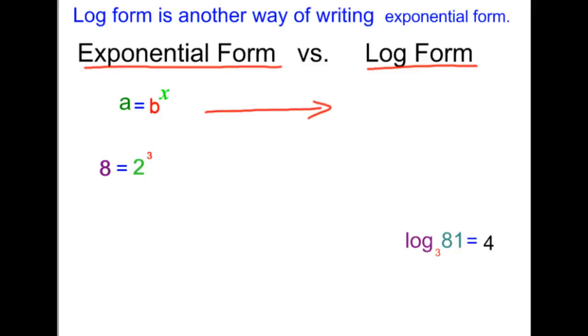Suppose I have an exponential equation like this: a equals b to the x power, where my answer to this exponent is a, the base of my exponent is b, and the exponent of the exponential form is x. When it changes to log form, here's what I'm going to do. Well, log form is an equation just like exponential form, so I need an equal sign. Log form has to have the word log written into it. So, I always write the word log first.